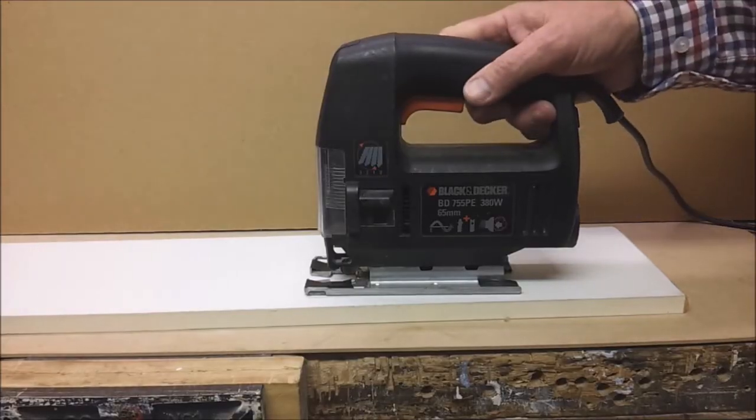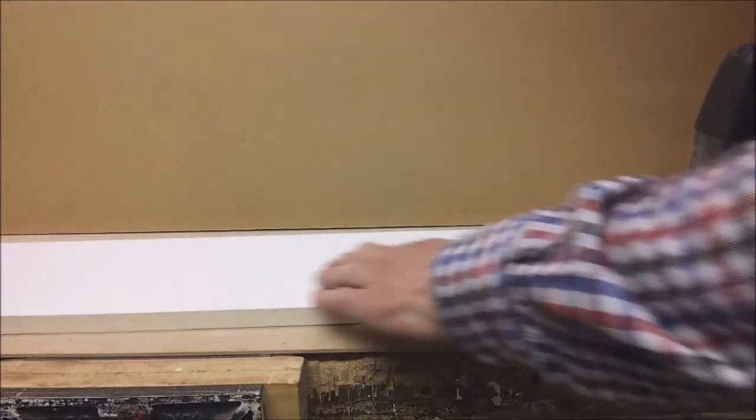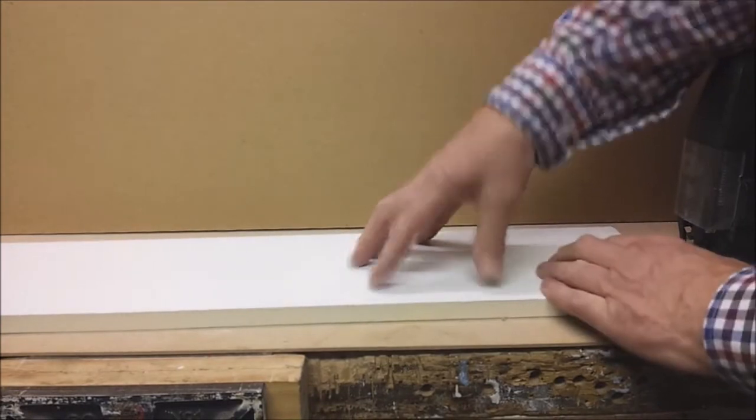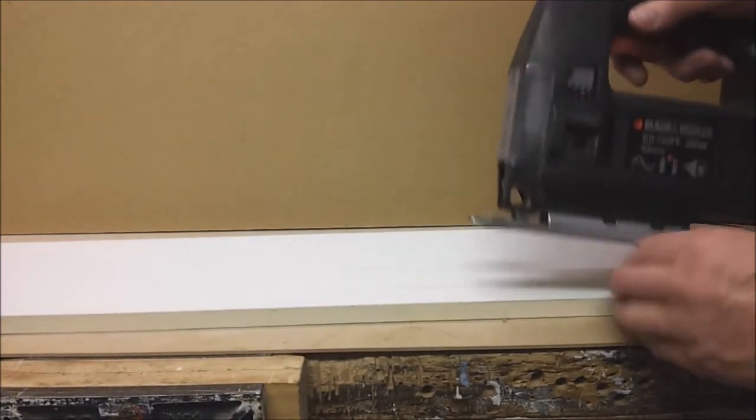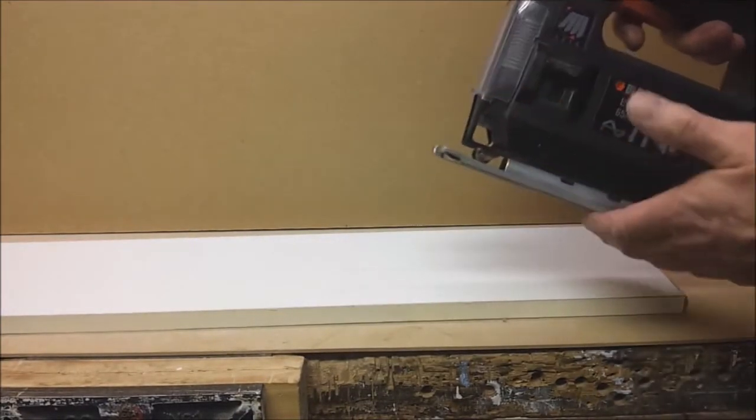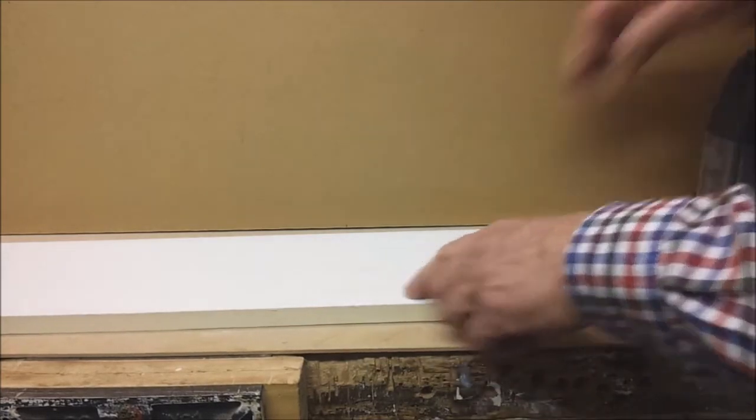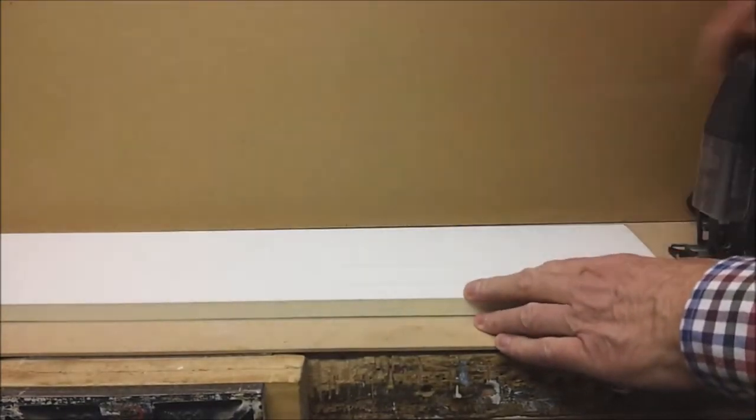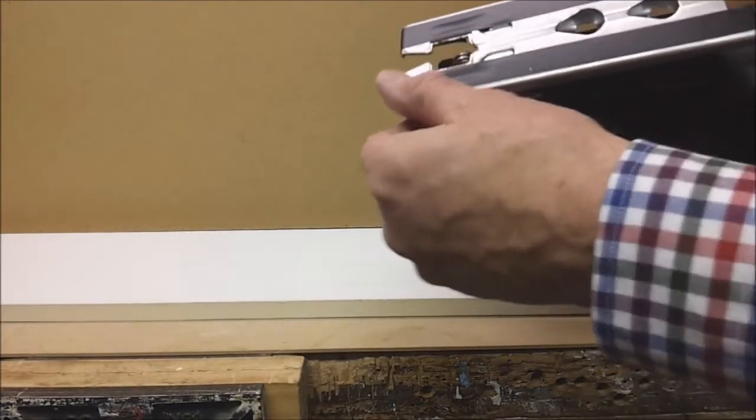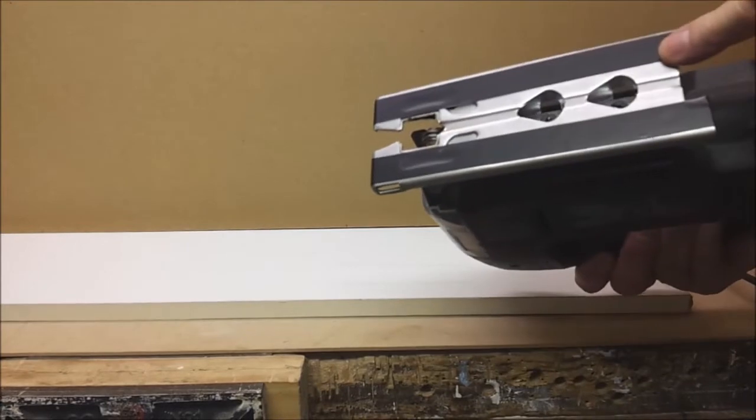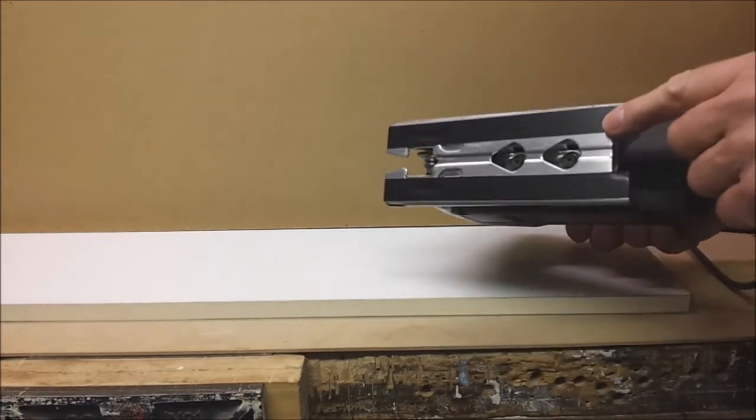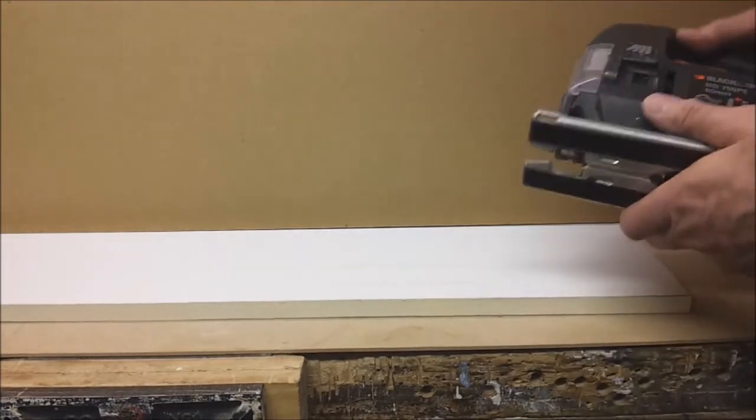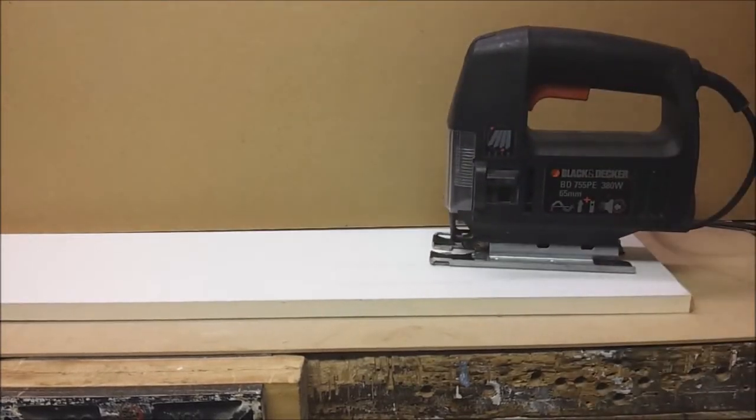When using a jigsaw to cut white melamine-faced furniture board, which is prone to marking, you might find that the vibration causes the metal sole plate to mark the white surface a bit like a pencil line. The way to get round that is to run two strips of PVC tape down the sole plate, and then that will avoid the marking. And the same goes if you're using a portable circular saw.